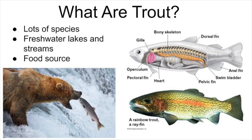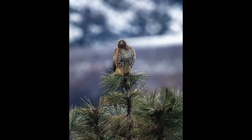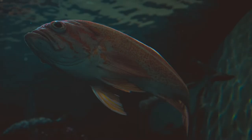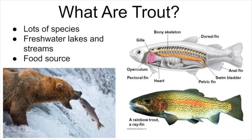So what exactly are trout? Trout are a group of many species of fish that usually live their lives in freshwater lakes and streams. Trout are important ecologically as a food source for birds of prey, bears, bigger fish, and even humans. In fact, the Nevada Department of Wildlife releases sterile rainbow trout, meaning they can't have babies, to teach communities about trout and for recreational purposes like fishing.